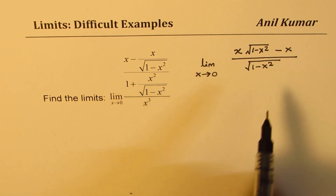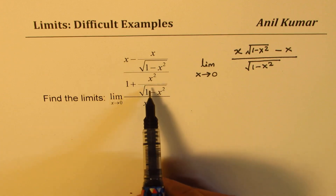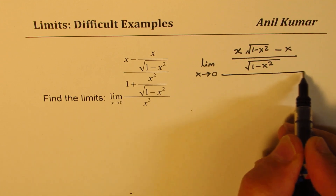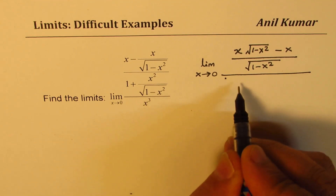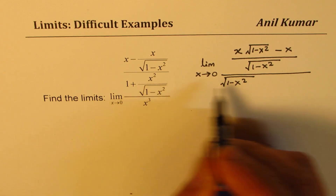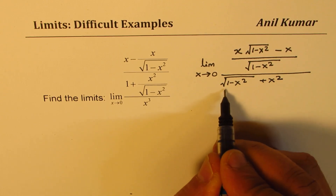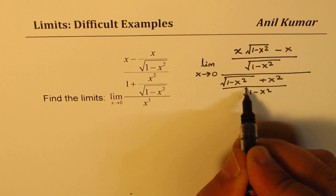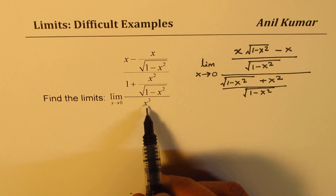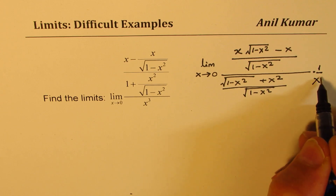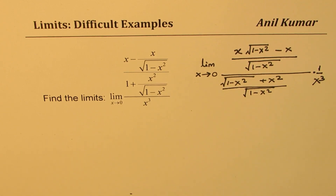The denominator for the numerator part is square root of 1 minus x squared. Now for the denominator of the other part, multiplying through gives square root of 1 minus x squared plus x squared, all divided by 1 minus x squared. Everything is then divided by x cubed, written as 1 over x cubed. I hope this rearrangement step is absolutely clear.